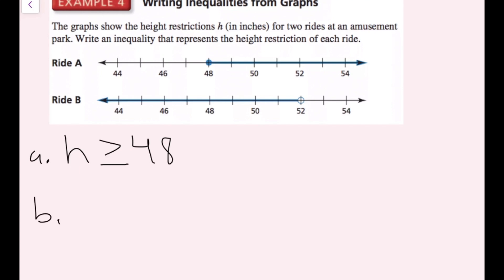For ride B, I see an open circle going to the left. Since the circle is not filled in, there is no 'or equal to,' and since it goes to the left we want values less than 52. So ride B is h is less than 52. Greater than because the graph goes right; less than because it goes left. Filled circle means 'or equal to' is included; open circle means it is not.